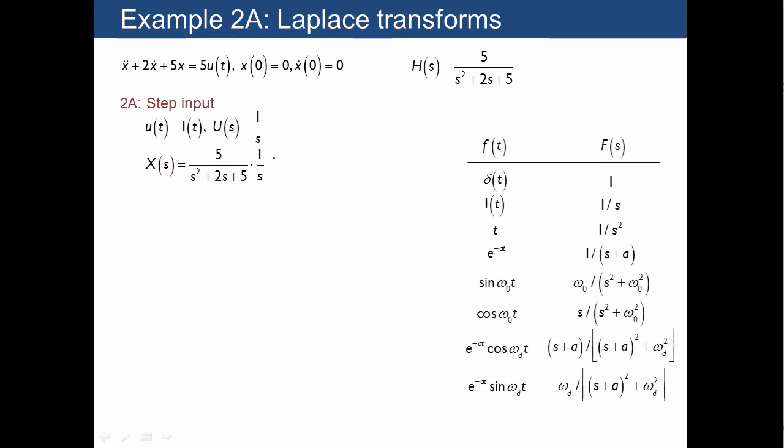So what we immediately realize is that we are going to have to match up with these terms here, e to the negative at, decaying exponential with sinusoids inside. And there are actually two of them, a cosine and a sine, that could possibly appear.